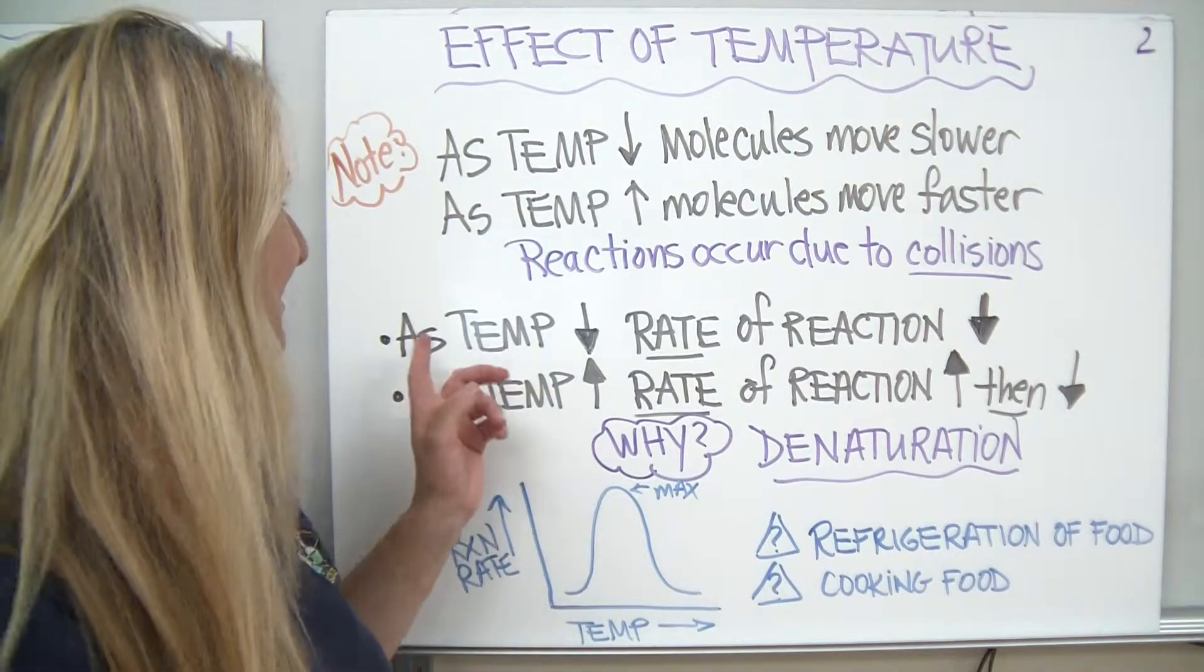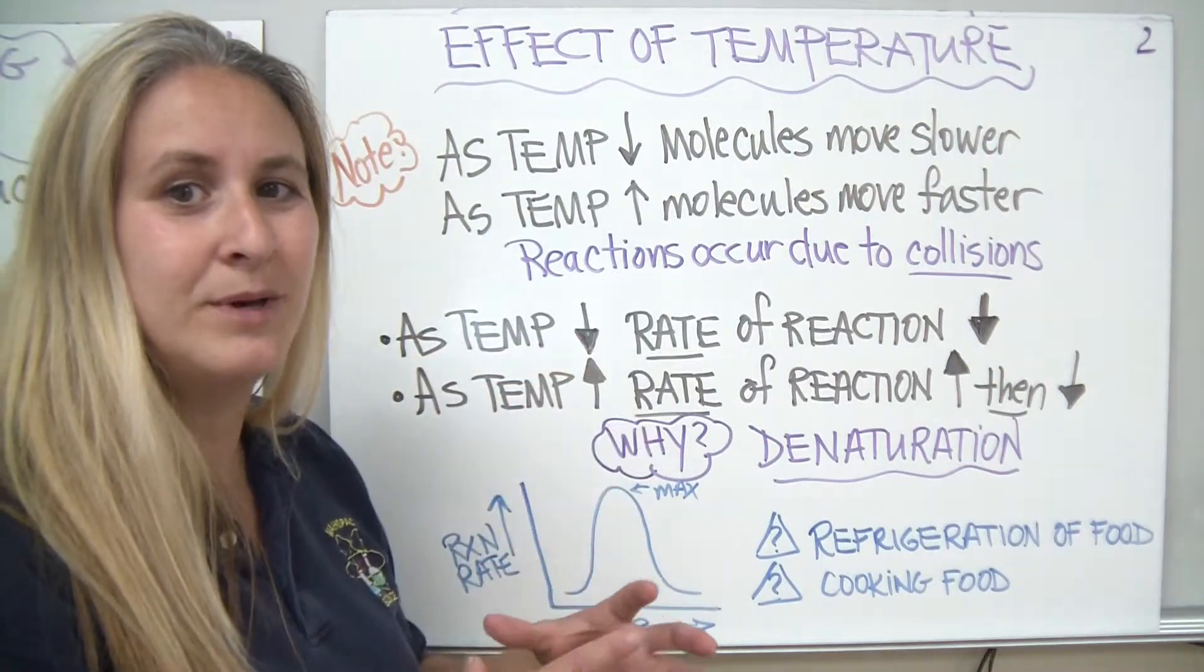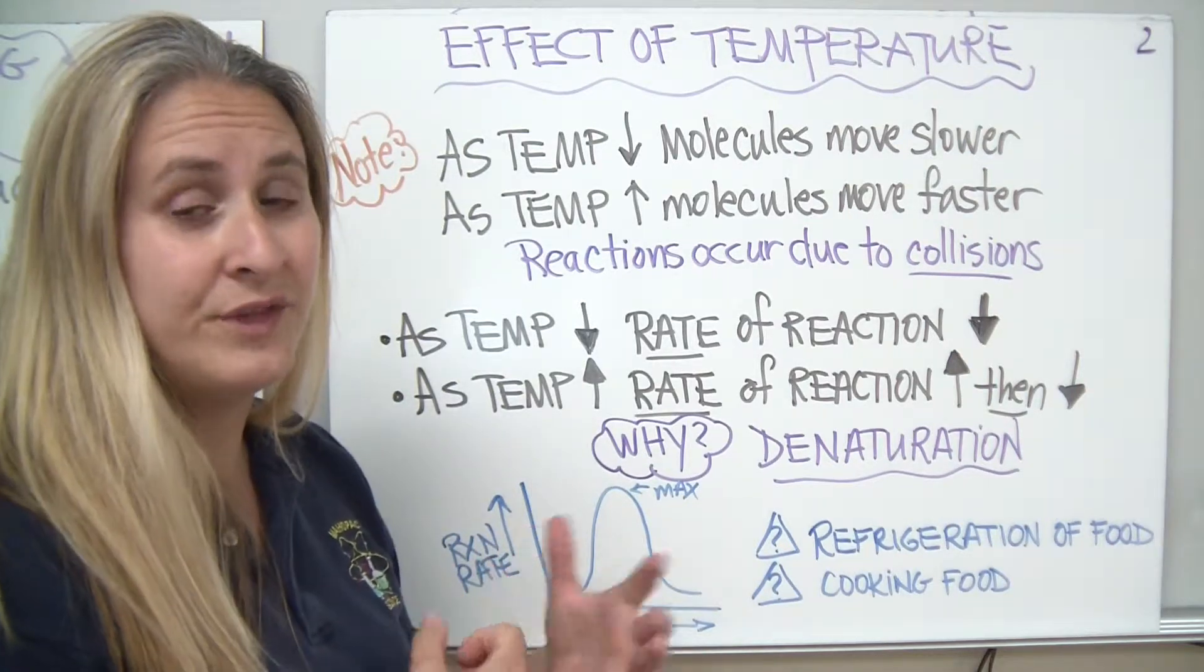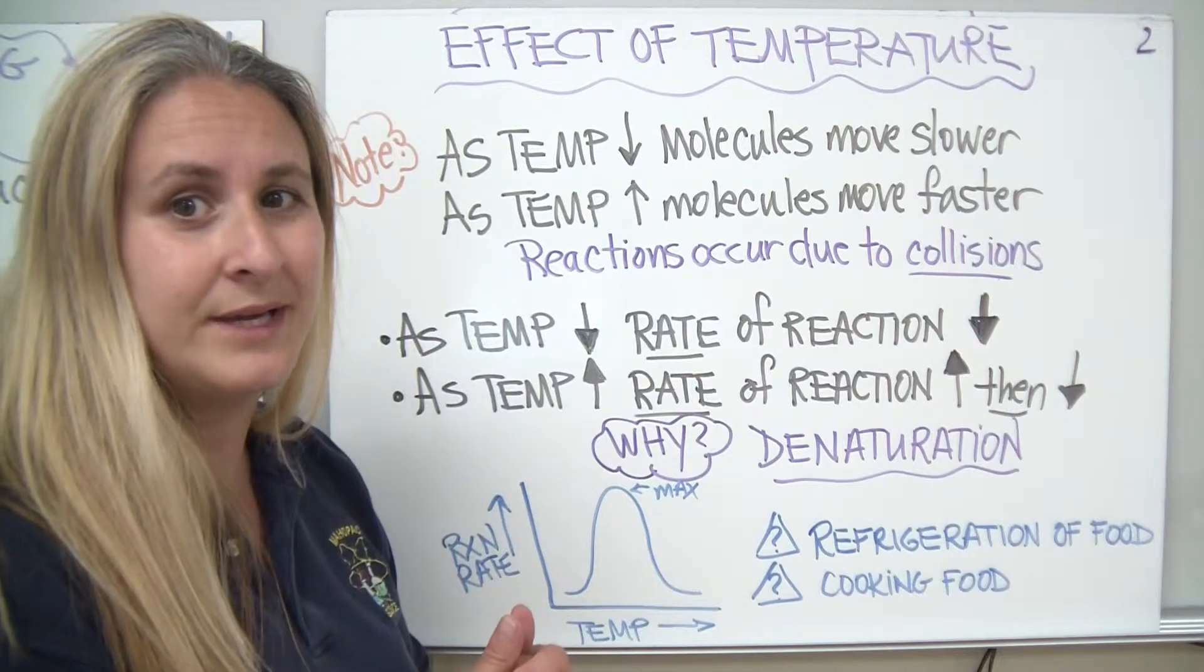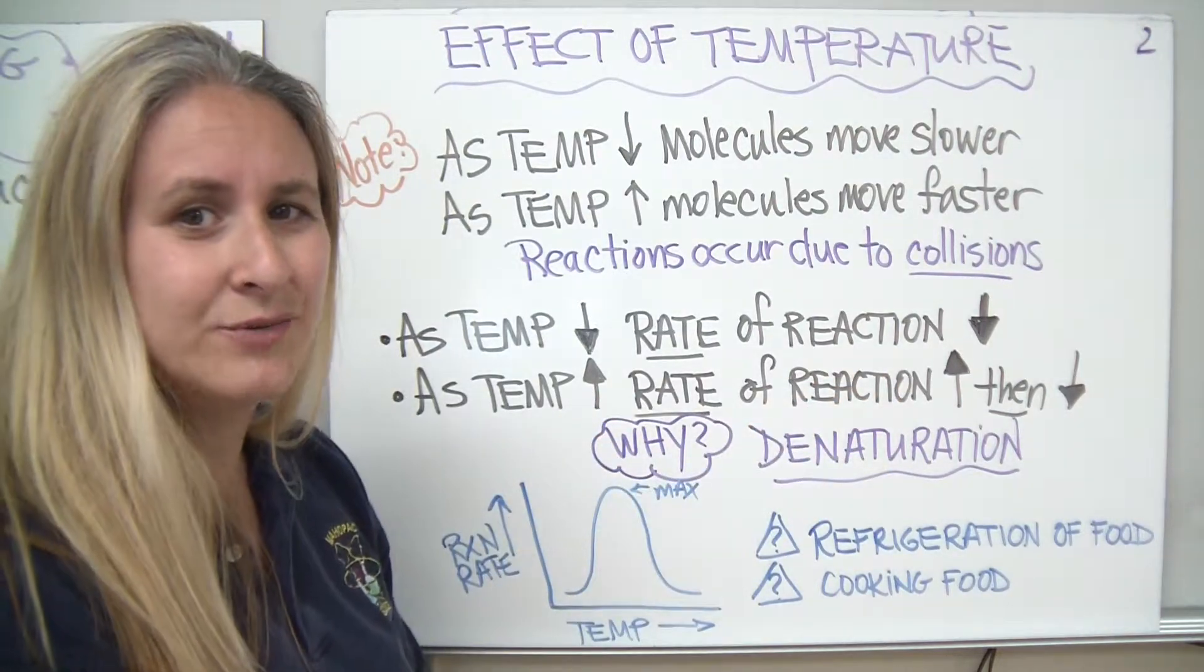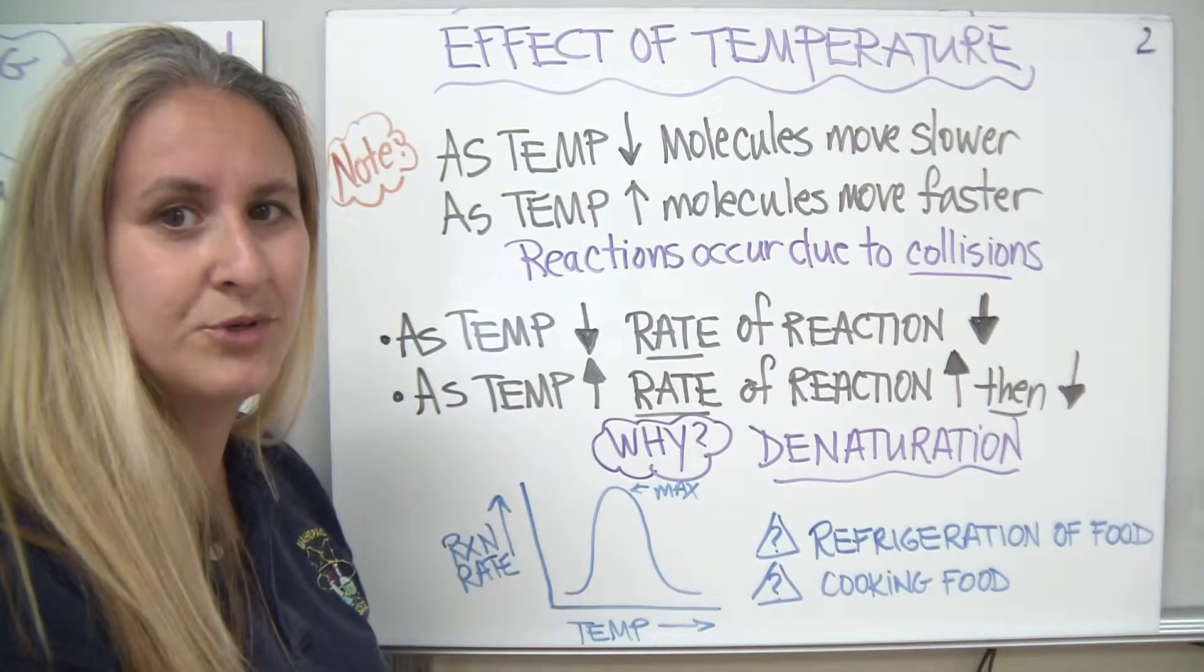The flip side happens with the temperature decreasing—molecules moving slower, they have less of a chance to collide, therefore fewer reactions will take place. But why is it that the rate decreases when you get to a certain temperature?